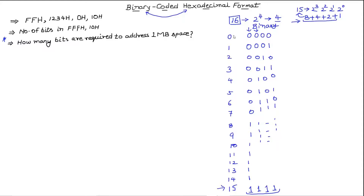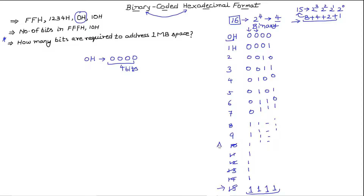If we write H in front of these numbers, it indicates a hexadecimal number — so 0h means the hexadecimal zero, decoded as four 0s, taking 4 bits. One important thing: instead of writing 10, 11, 12, 13, 14, 15 — because they take two digits — we use the capital letters A, B, C, D, E, and finally F.